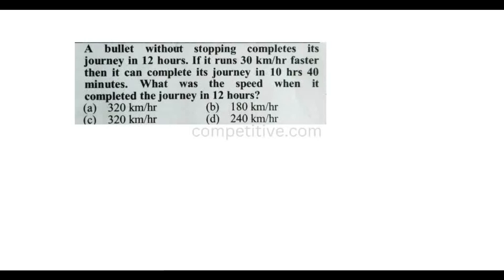A bullet train without stopping completes its journey in 12 hours. If it runs 30 km/h faster, it can complete its journey in 10 hours 40 minutes. What was the speed when it completes the journey in 12 hours?